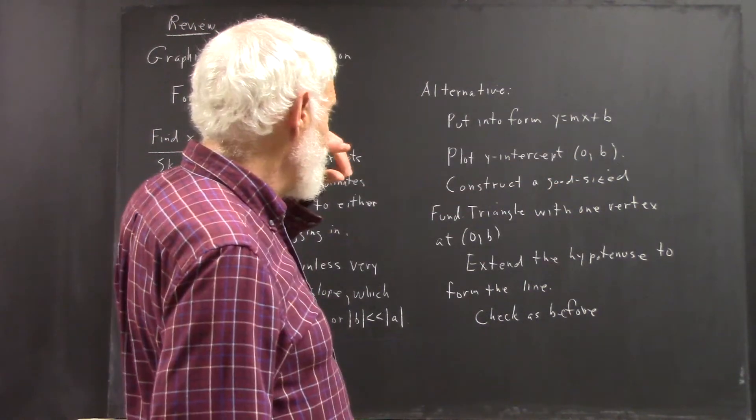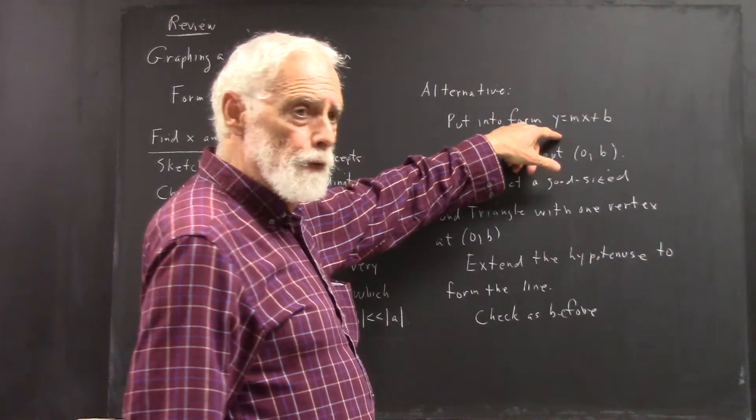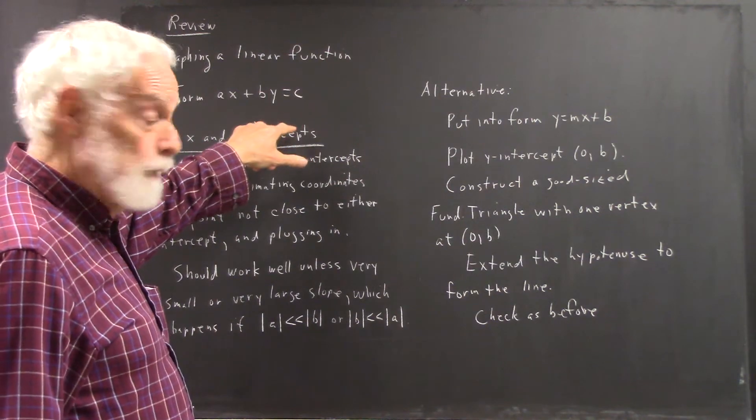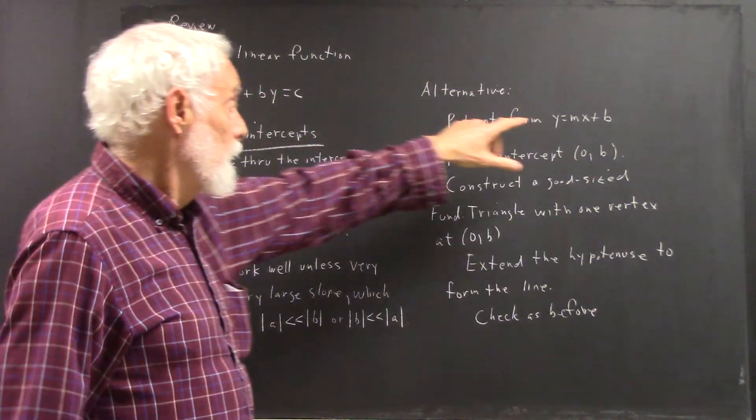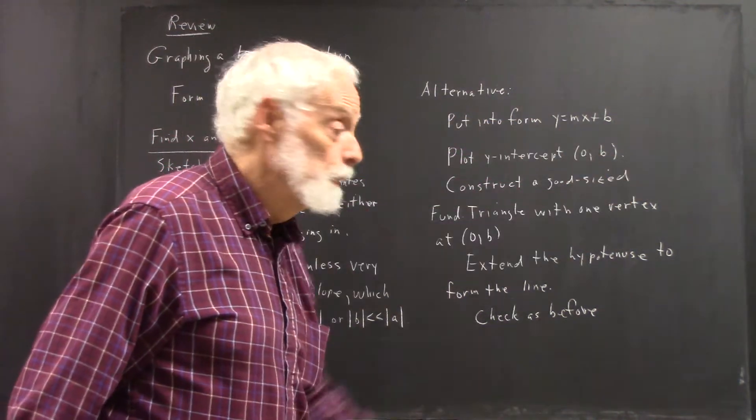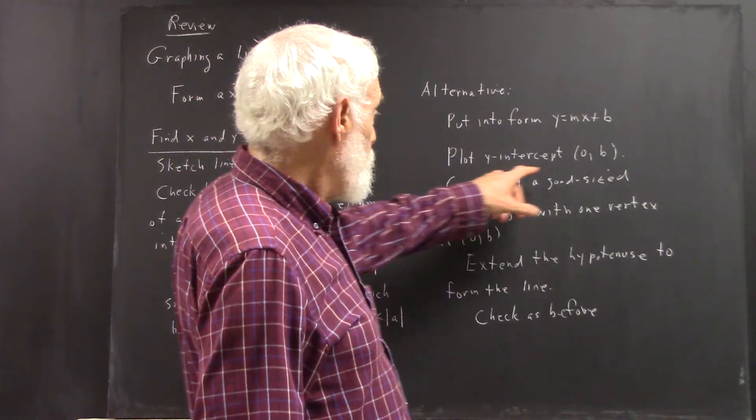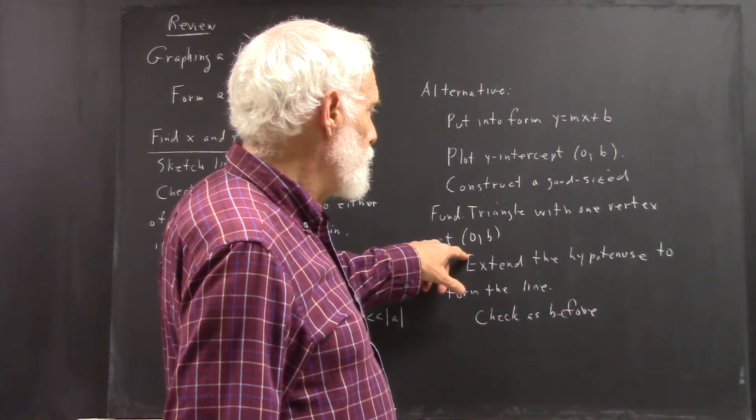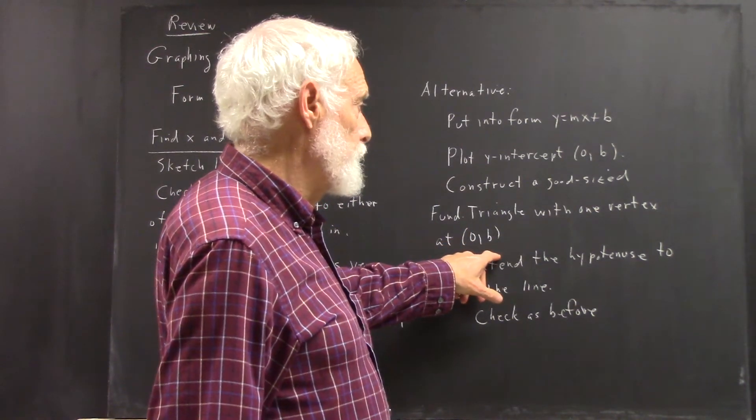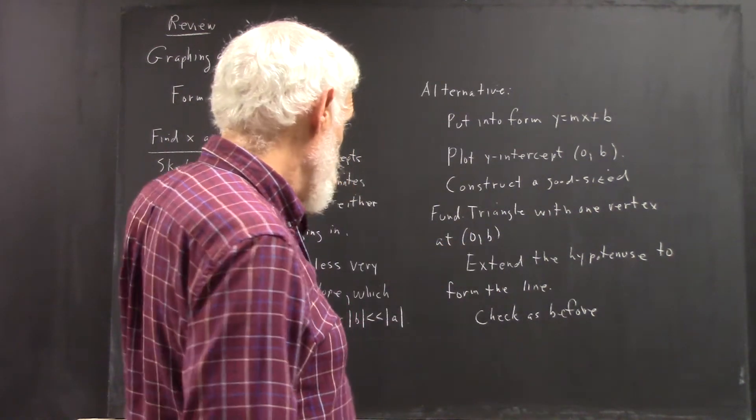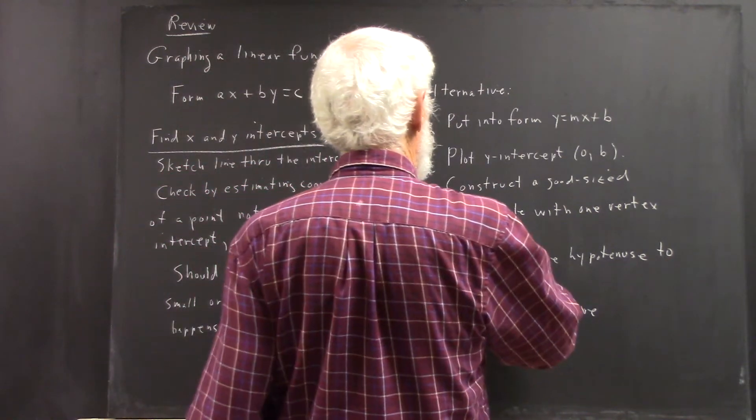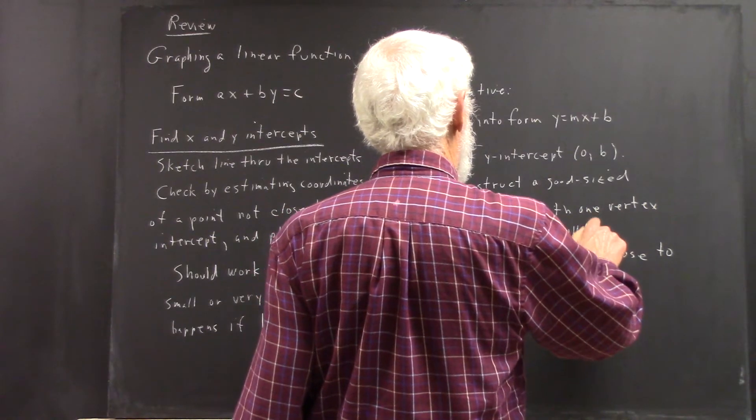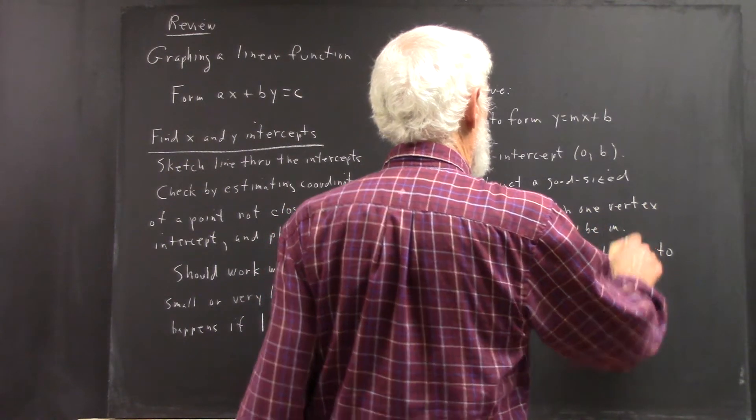So what we do is we put the equation into the form y equals mx plus b. The equation's in this form. We solve for y and we get the form y equals mx plus b. We plot the y-intercept, which is 0,b, and then construct a good-sized fundamental triangle with one vertex at 0,b.